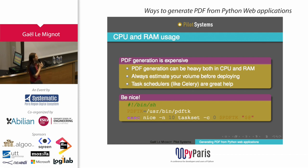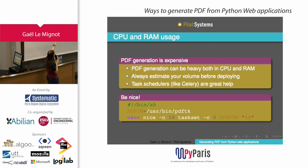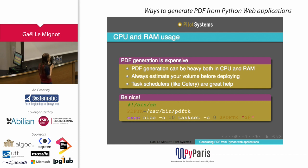In general, PDF generation is expensive, so you have to estimate the volume before deploying a solution. Try to get an estimate of how often you'll need to generate PDFs. A task scheduler is a great help here. You can also use OS-level tricks: run the PDF generation process at low priority using the nice command, and use taskset with 0xC0 to restrict it to only the first core, leaving all other cores free to handle normal requests.